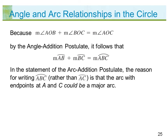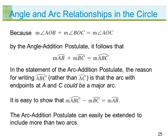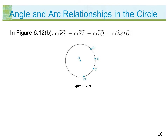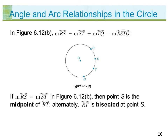In the statement of the arc addition postulate, the reason for writing arc ABC rather than arc AC is that the arc with endpoints at A and C could be a major arc. The arc addition postulate can be extended to include more than two arcs. In figure 6.12b, if the measure of arc RS equals the measure of arc ST, then point S is the midpoint of arc RT, meaning arc RT is bisected at point S.